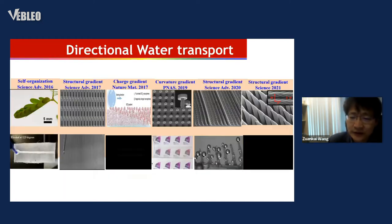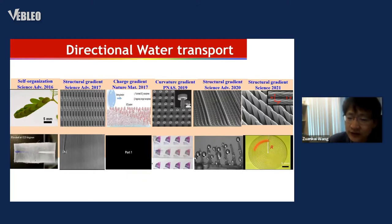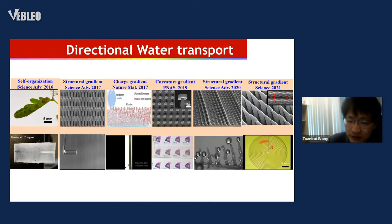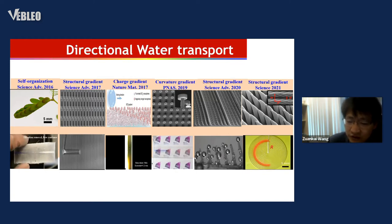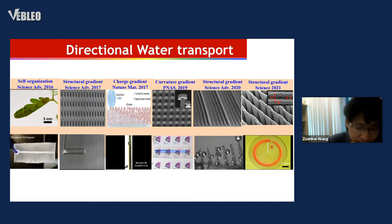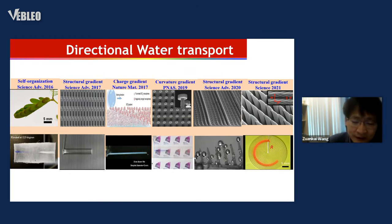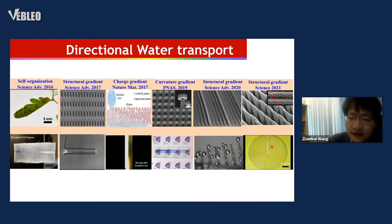Then we started working on how to control the liquid transport on the surface. By controlling the surface structure, or electrostatic surface charge density, or gradient, and other kinds of gradients, we can make the water flow spontaneously, over long range, and at a very high speed.